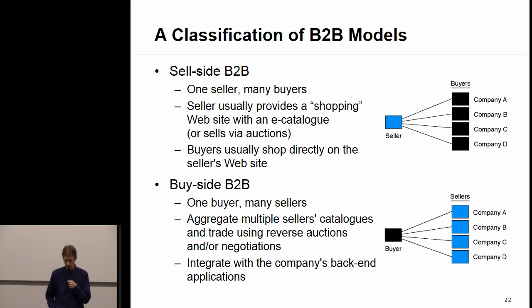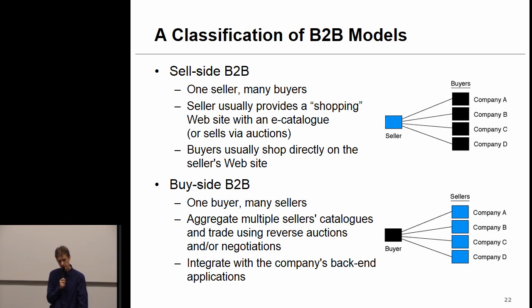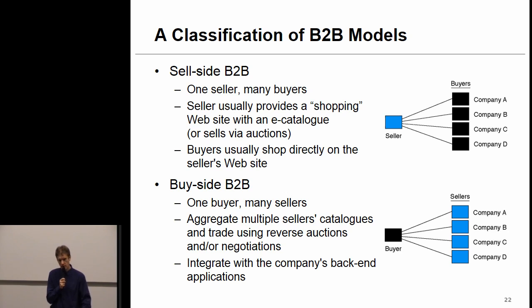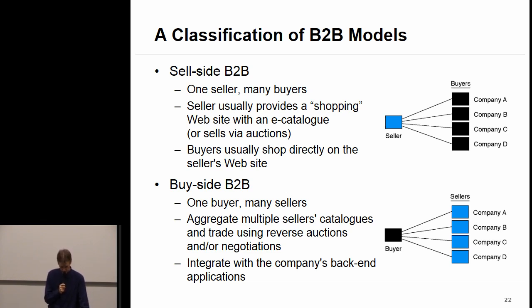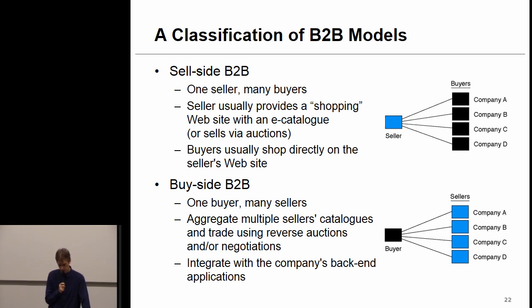Roughly speaking, you can make a distinction between sell-side B2B and buy-side B2B. In a sell-side B2B, there is one seller and many buyers. Usually the seller provides a shopping website with an e-catalog that allows buyers to log on, specify the products they want, and order them. The seller can also sell via auctions. Buyers shop directly on the seller's website, configure the products, and purchase them.